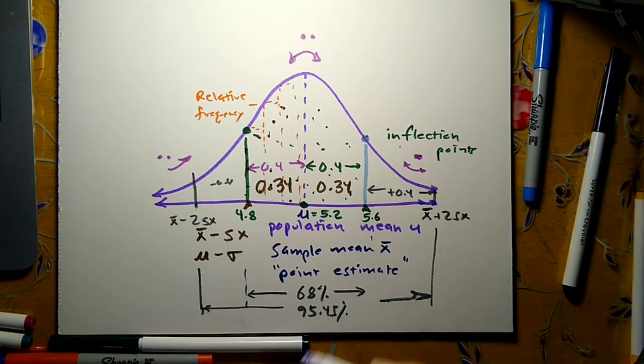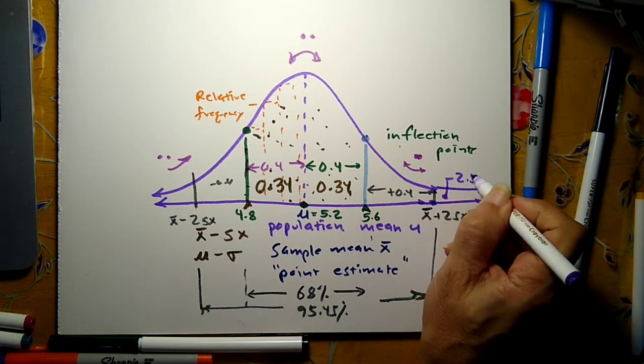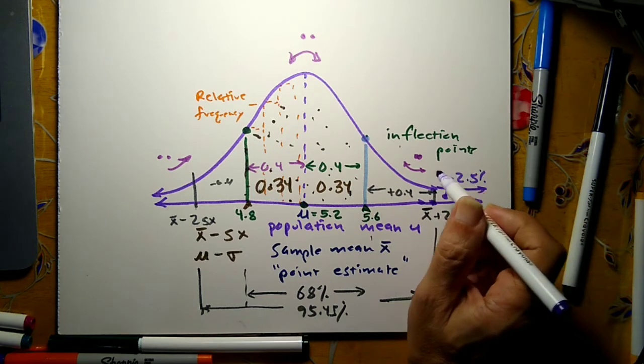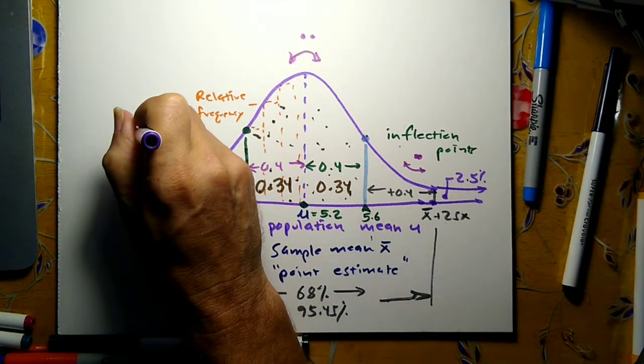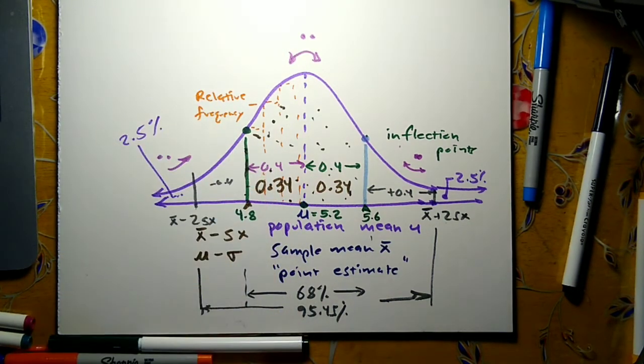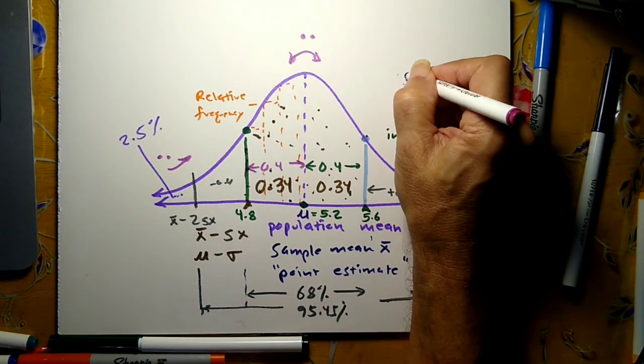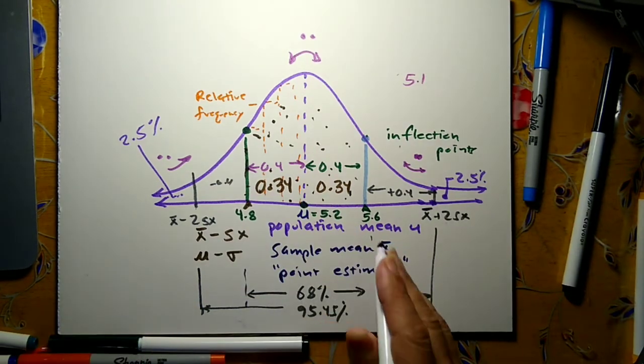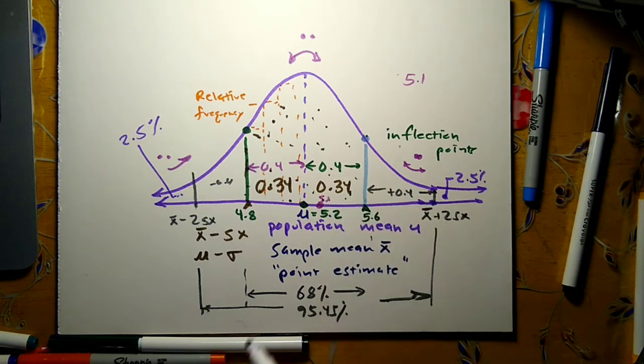Beyond that, out here in the right tail, I would expect about 2.5% of the data out there, roughly. And out here in the left tail, I'd expect 2.5% of the data. What this will let us do is determine whether a data value is likely to be from this distribution or not. If somebody says I've got a marble of 5.1, is that likely to be in this distribution? Yes, 5.1 is right in here. That's highly likely to be from the same group of marbles.